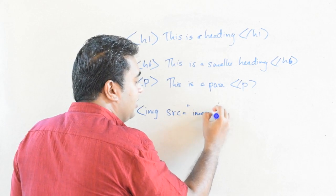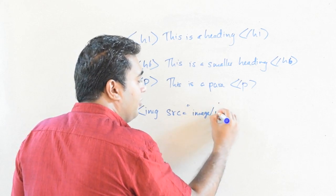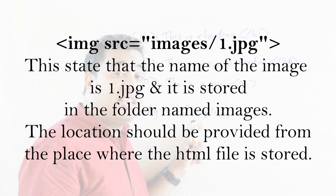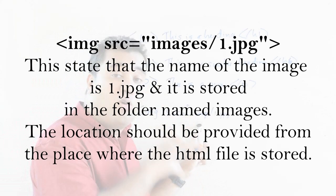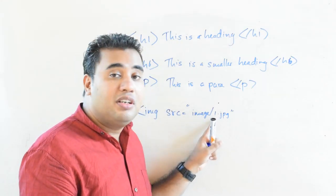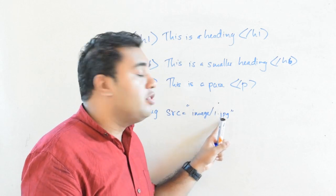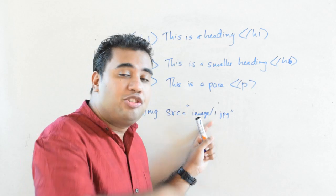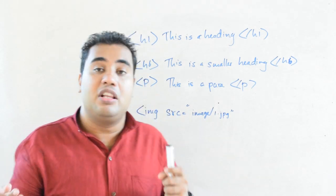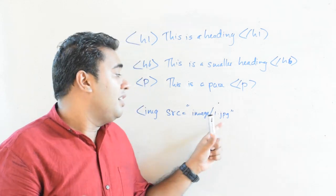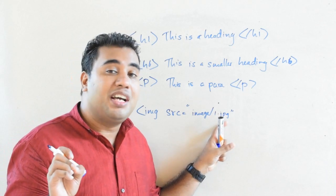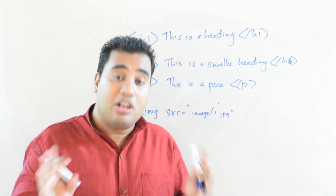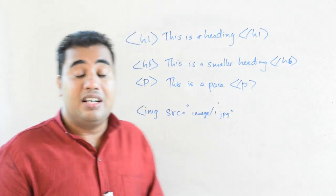The src attribute states where the image is stored on your computer — you give the location of the image, for example images/one.jpg within inverted commas. This means there is a folder called images containing a file named one.jpg. You must always give the location relative to where the HTML page is stored, and you must include the file extension such as .jpg, .png, or .gif.